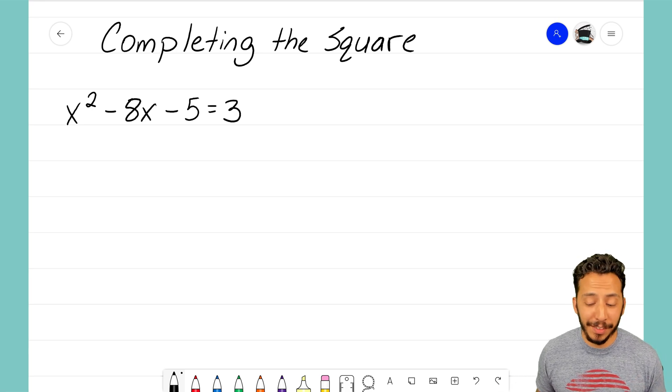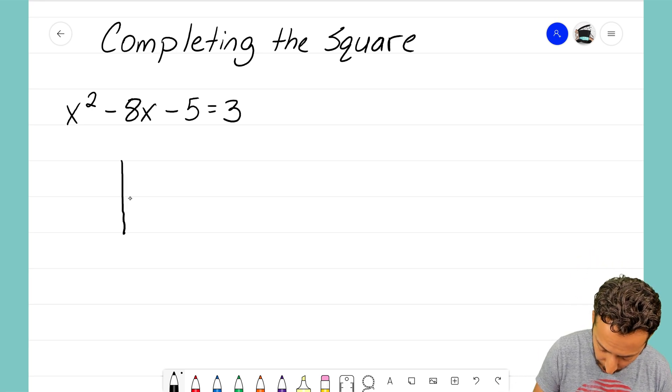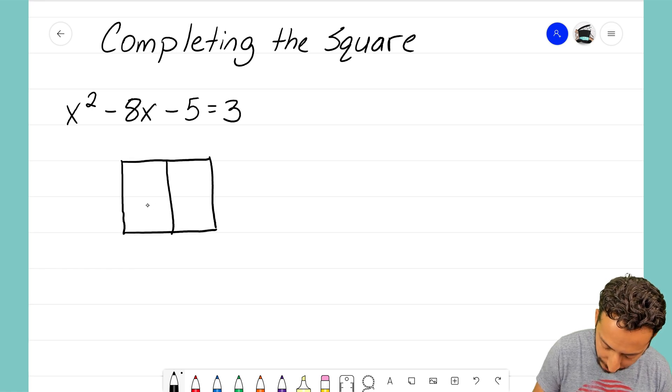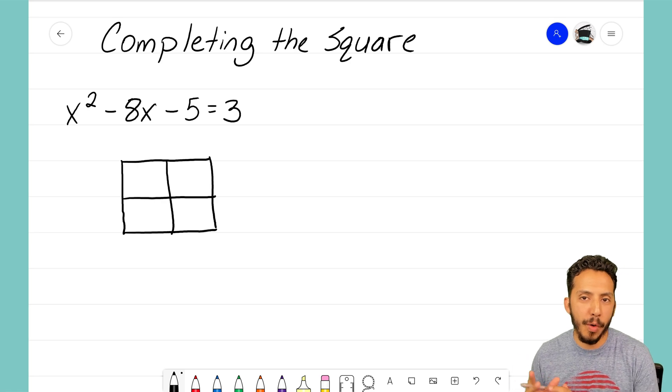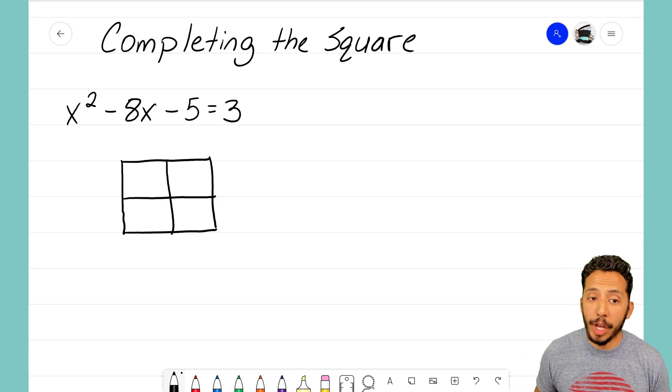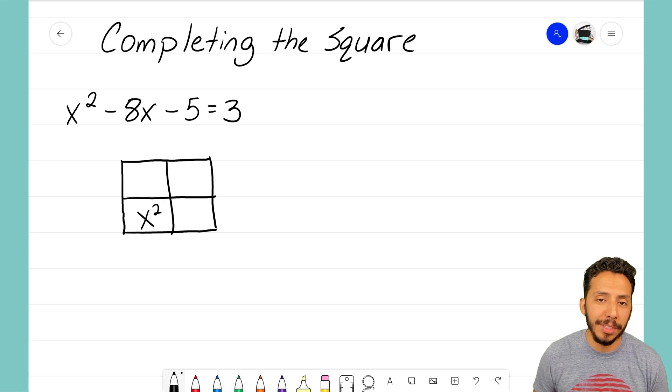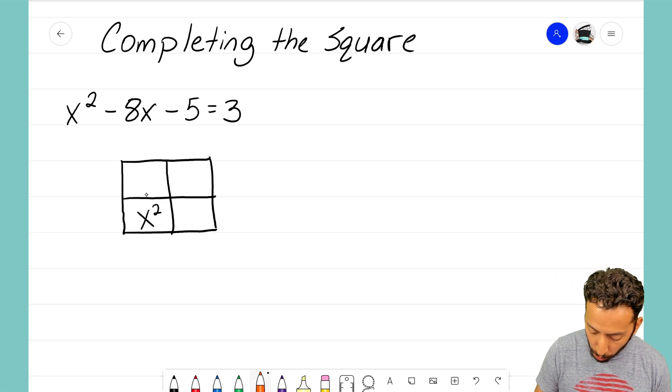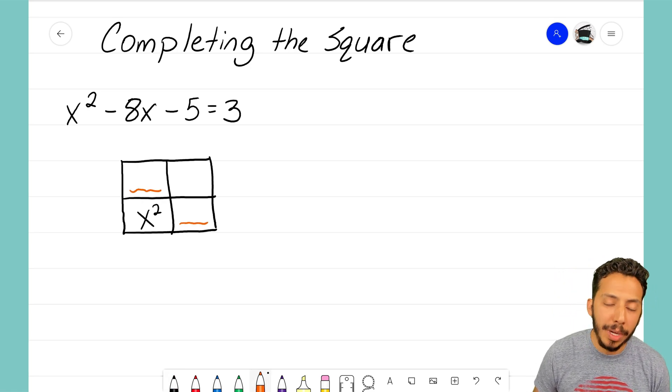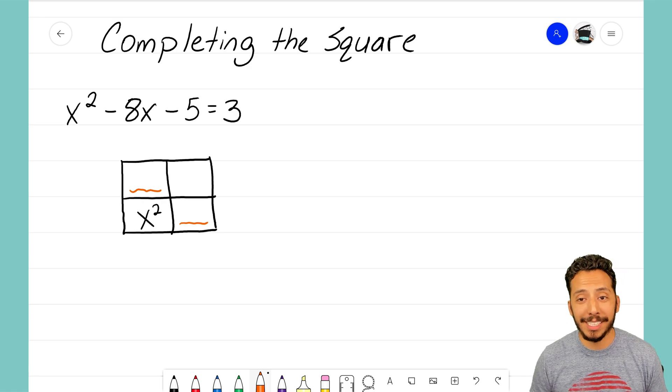So first things first, when we're using the completing the square method, we need to build a generic rectangle so that we can show how we're going to complete the square for this quadratic. Now I know that x squared is going to go in the bottom left corner. And now I need to think about what I'm going to put in these two spots here on the generic rectangle, that diagonal.